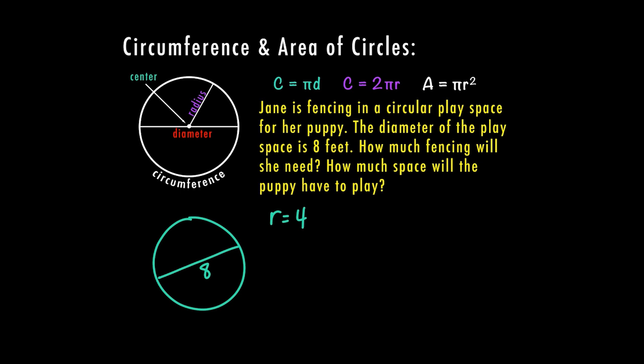Now we have two different questions here. The first one wants to know how much fencing is she going to need? Well, the amount of fencing is going to go around the outside. So this fencing is going to be your circumference. That means that we also need to find how much space will the puppy have to play? Well, the puppy can play anywhere inside of the circle. So this would be our area.